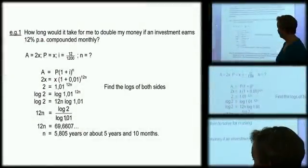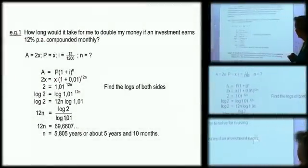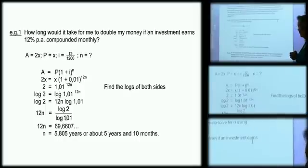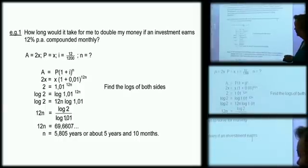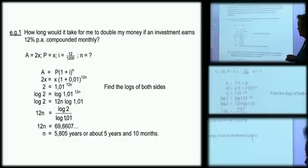When we asked how long would it take me to double money, I've taken the same sort of thing here. I've used 2X and X simply. It's 12% compound monthly, so it's 12 over 1200. N we don't know.